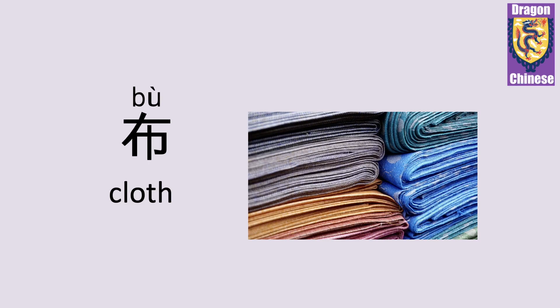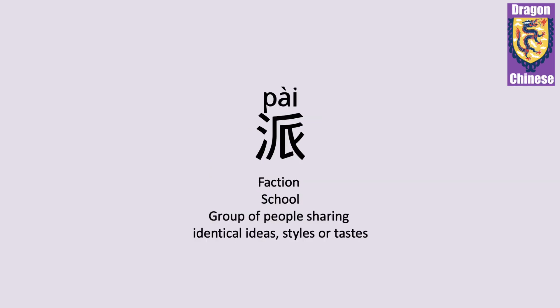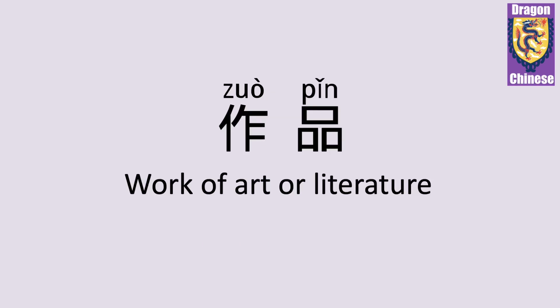布 — cloth. 布. 规则 — regular, rule. 规则. 派 — faction, school; a group of people sharing identical ideas, styles or tastes. 派.